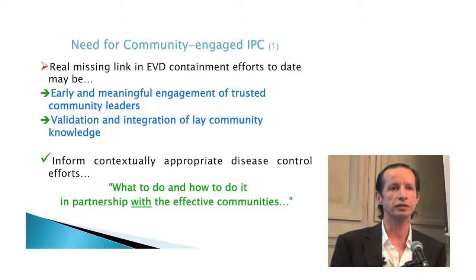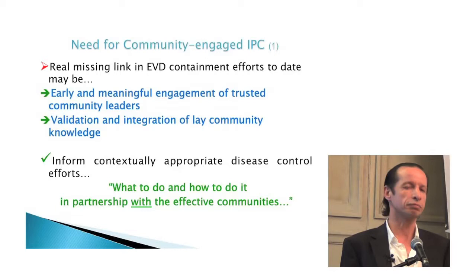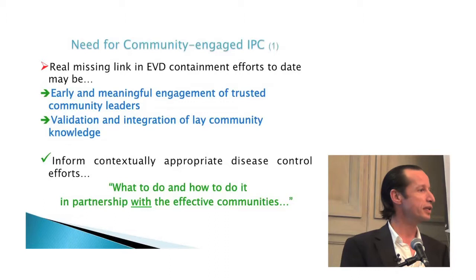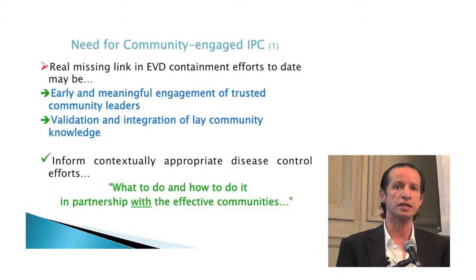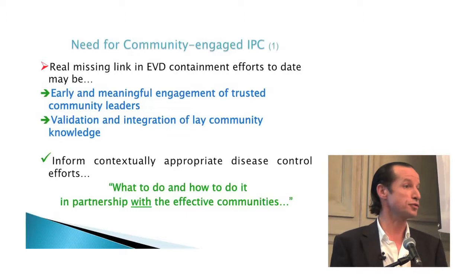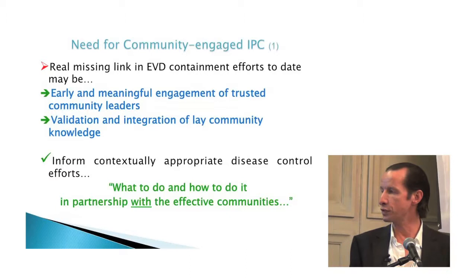There's been a lot of discussion about the missing link in Ebola containment, and I would argue one of the main missing links is the early and meaningful engagement of trusted community leaders, and the validation of lay community knowledge. Quite often the real knowledge of community members is just being rejected and ostracized. That's important if we really want to develop contextually appropriate responses that align with community protocols — so that together, in partnership, they can tell us what to do and how to do it.